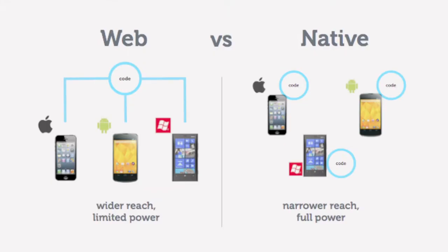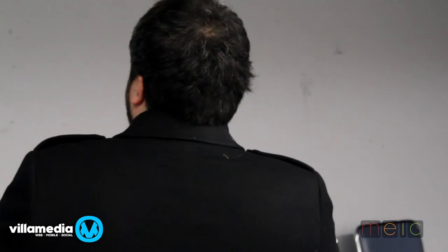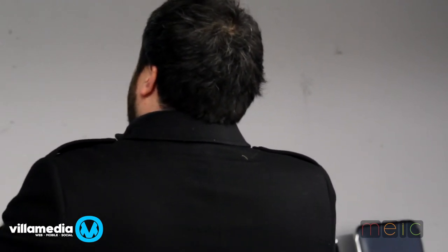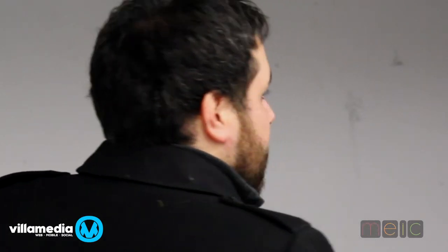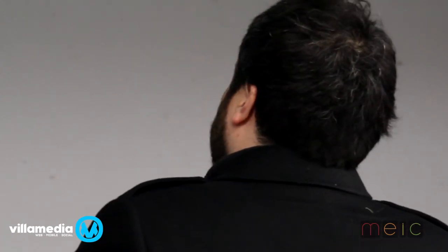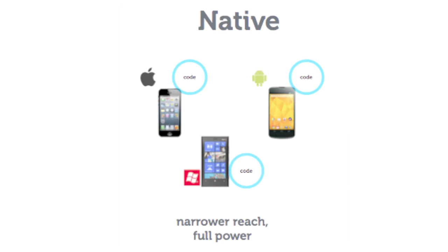Every time you need to make a change, it's like having documents in French, Spanish, English, and Italian — you have to go through every single document and change every paragraph for each device. On the web side, we have a wider reach, meaning that with just one language and one code base we can reach a large number of devices because they all understand the same language. But that comes at a price: limited power — you do not have access to all the capabilities of the device. On the native side, we have a narrower reach, but full power and complete communication with that device.